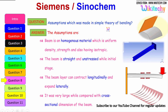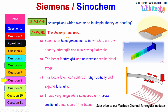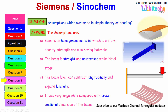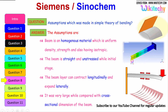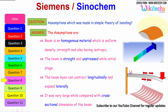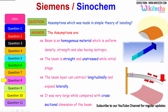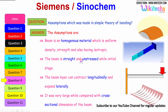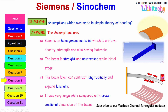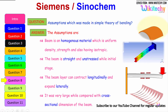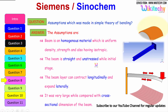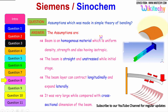What are the assumptions made in the simple theory of bending? The beam is made of homogeneous material with uniform density, strength, and isotropic properties. The beam is straight and unstressed in its initial stage. The beam can contract longitudinally and expand laterally. The length of the beam is very large compared with its cross-sectional dimensions.